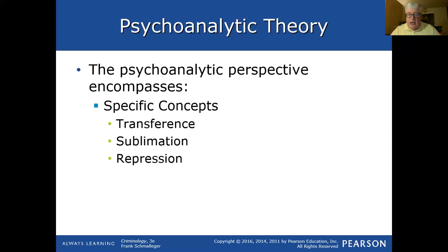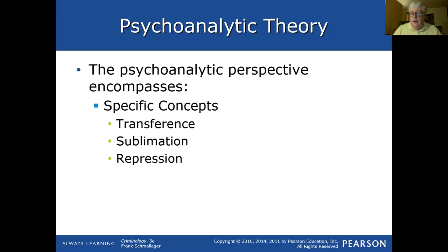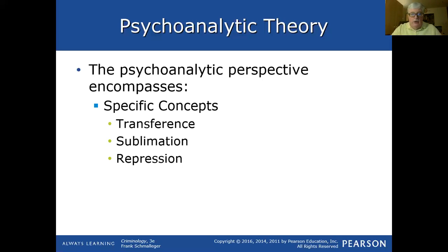Transference is when blame for something is transferred from one person to another. Sublimation may involve replacing a person with another — for example, serial killers who had problems with their mother growing up, who later seek out women who look similar and kill them. Repression is when we bury things deep inside us; sometimes they pop out and cause issues. These are better explained in the book.